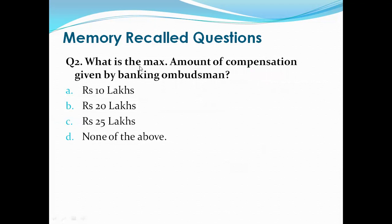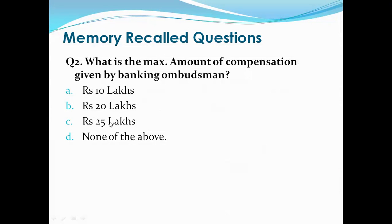Question 2: What is the maximum amount of compensation given by the Banking Ombudsman? The Banking Ombudsman resolves grievances of customers related to banks. Options are: 10 lakh rupees, 20 lakh, 25 lakh rupees, none of the above. The right answer is B, that is 20 lakh rupees.